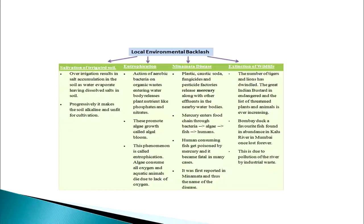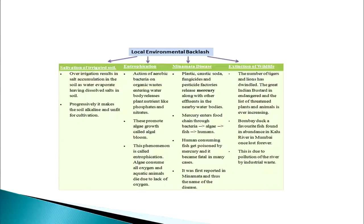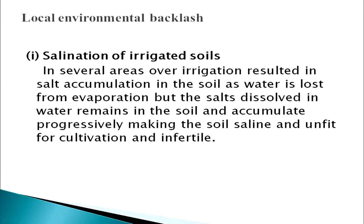Local environmental backlash number one is salination of irrigated soil. In several areas, over-irrigation resulted in salt accumulation in the soil as water is lost through evaporation. The salts dissolved in water remain in the soil and accumulate progressively, making the soil saline and unfit for cultivation — rendering it infertile.